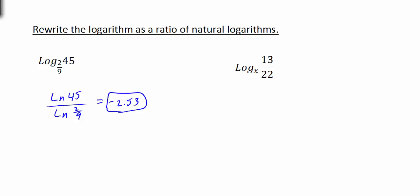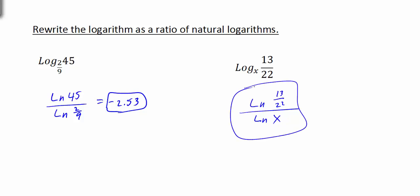Now, this other example over here: we have log base x of 13 over 22. If we're going to write this as a ratio of natural logs, we write this as the natural log of 13/22 divided by the natural log of x. Because we don't know the value of x, we can't put this in the calculator. But if we were given a value of x, we could evaluate it. We can certainly write this as a ratio of natural logs.